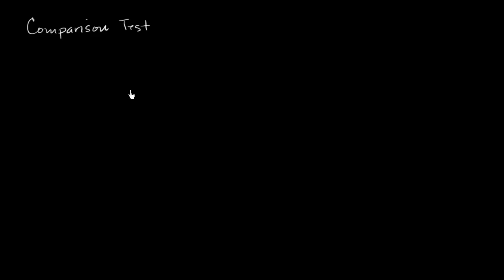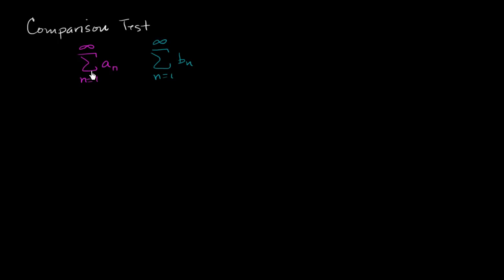Let's get a basic understanding of the comparison test when we are trying to decide whether a series is converging or diverging. Let's think of two series. I have this magenta series — an infinite series from n equals one to infinity of a sub n — and another series, b sub n, from n equals one to infinity. We know some things about these series.